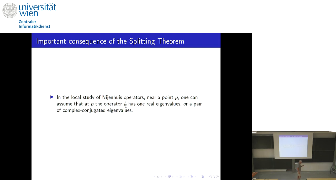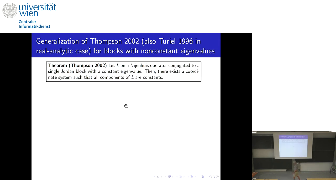In all local study of Nijenhuis operators near a point P, one can assume that at P the operator L has only one real eigenvalue or a pair of complex conjugate eigenvalues. We reduce our study to the case when the eigenvalue is one locally, and assume the operator is conjugate to a Jordan block.